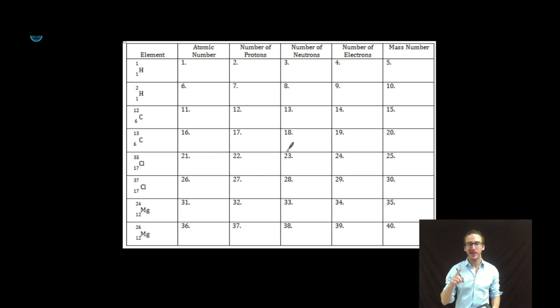Hey, what's up everybody? We're going to do some quick practice interpreting some of those different isotope notations we're going to see to help us better understand what those notations mean in terms of atomic number, number of protons, number of neutrons, number of electrons, and mass number.